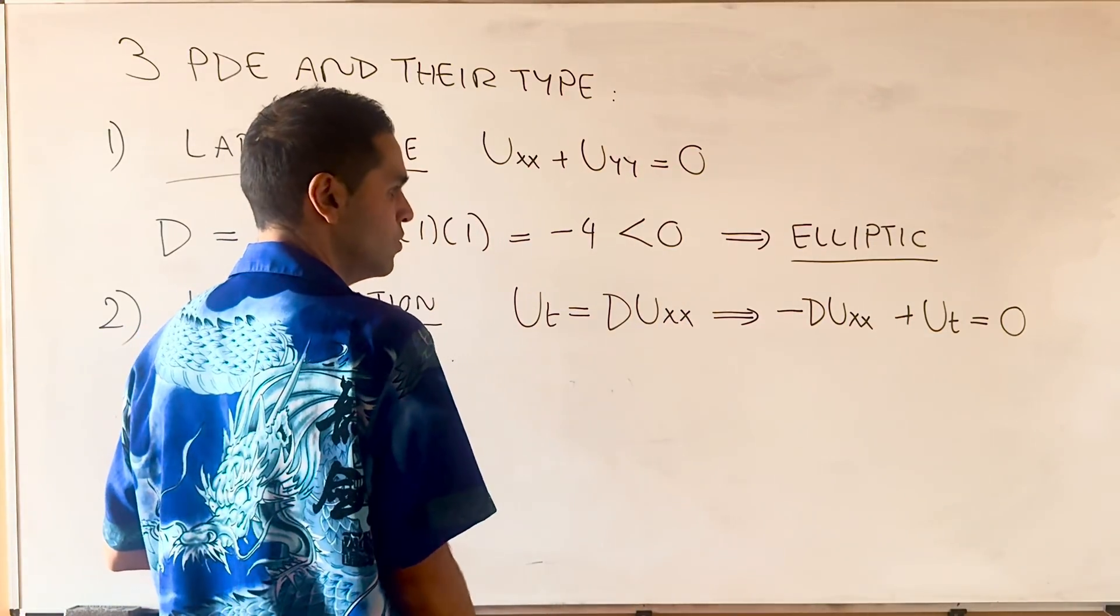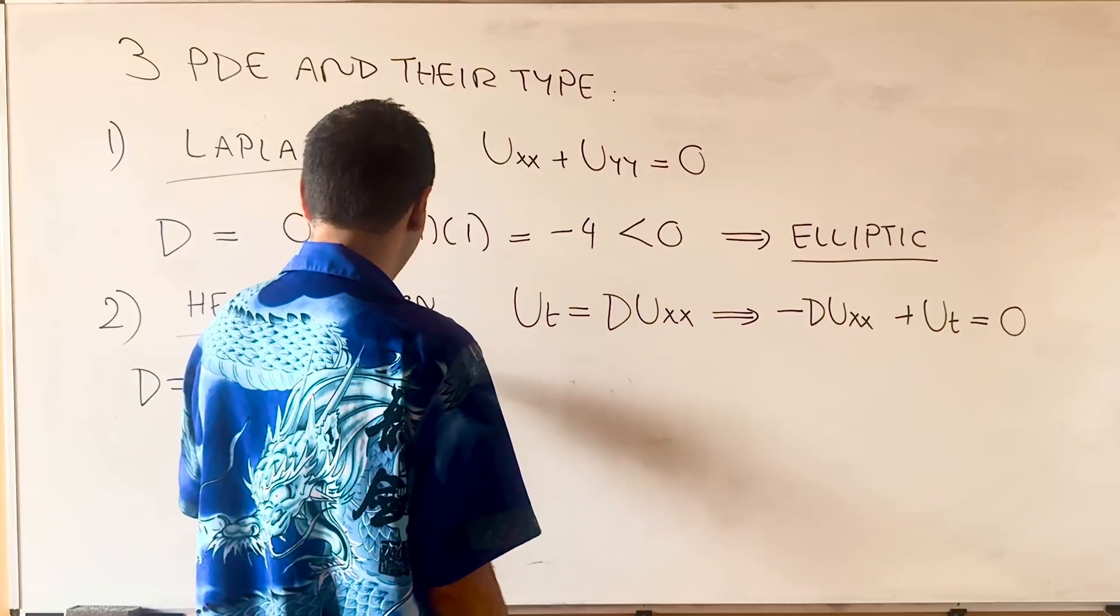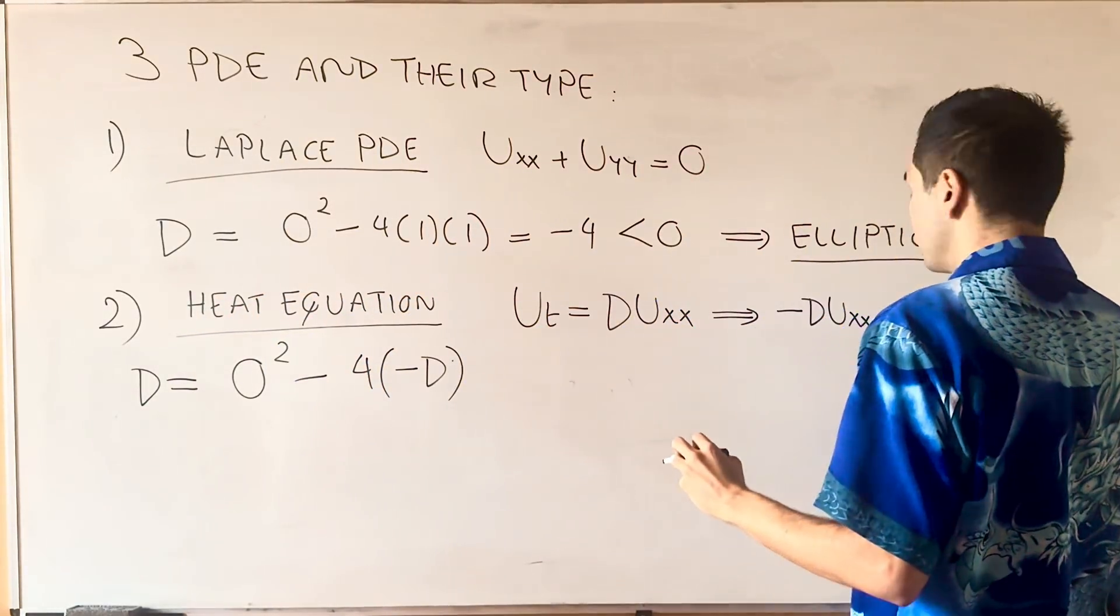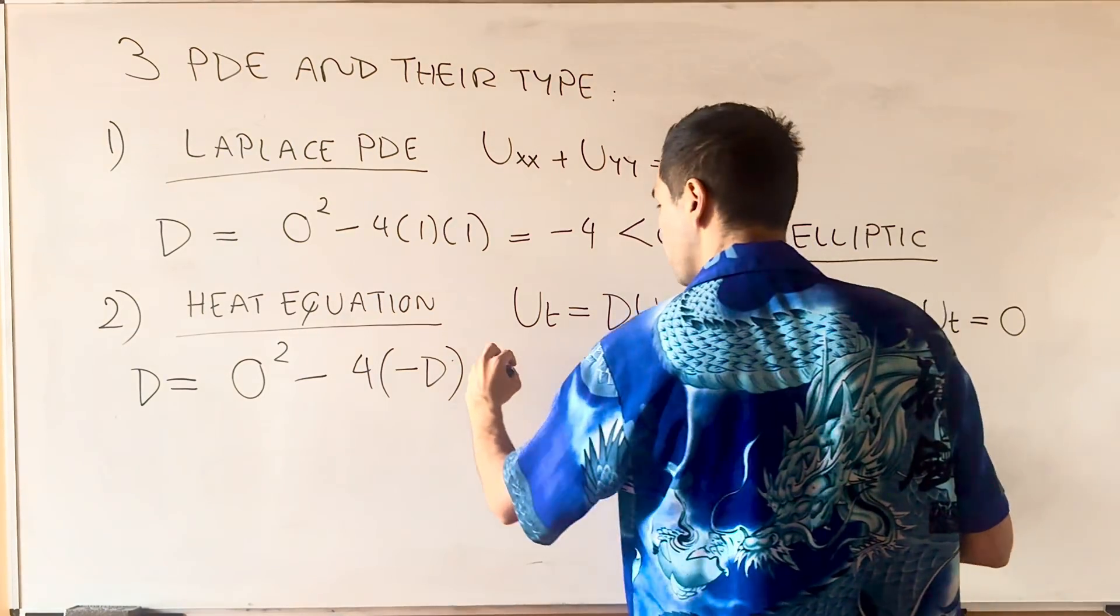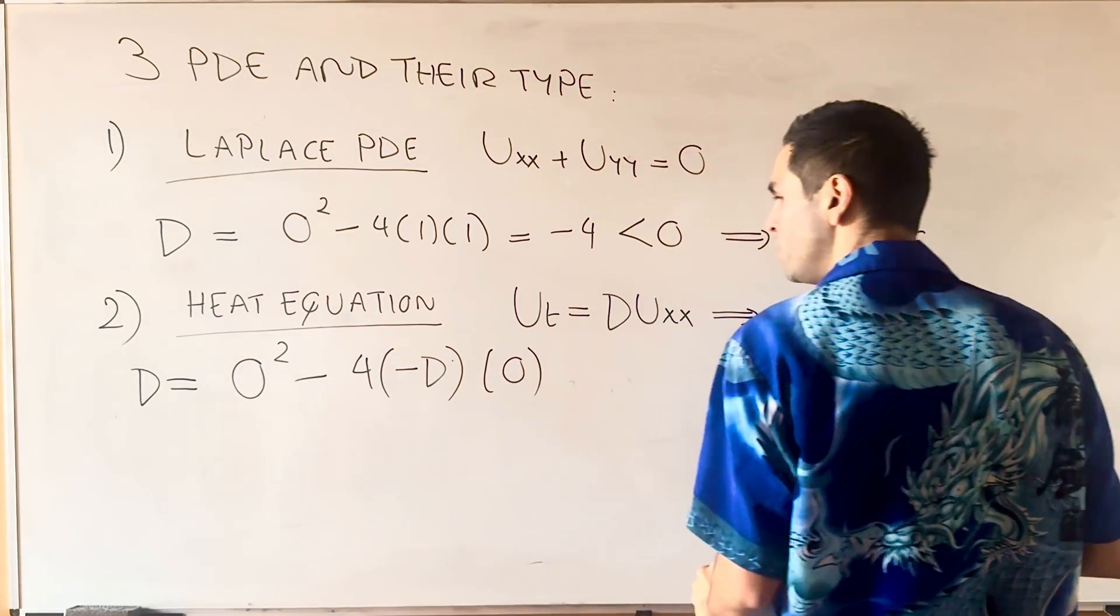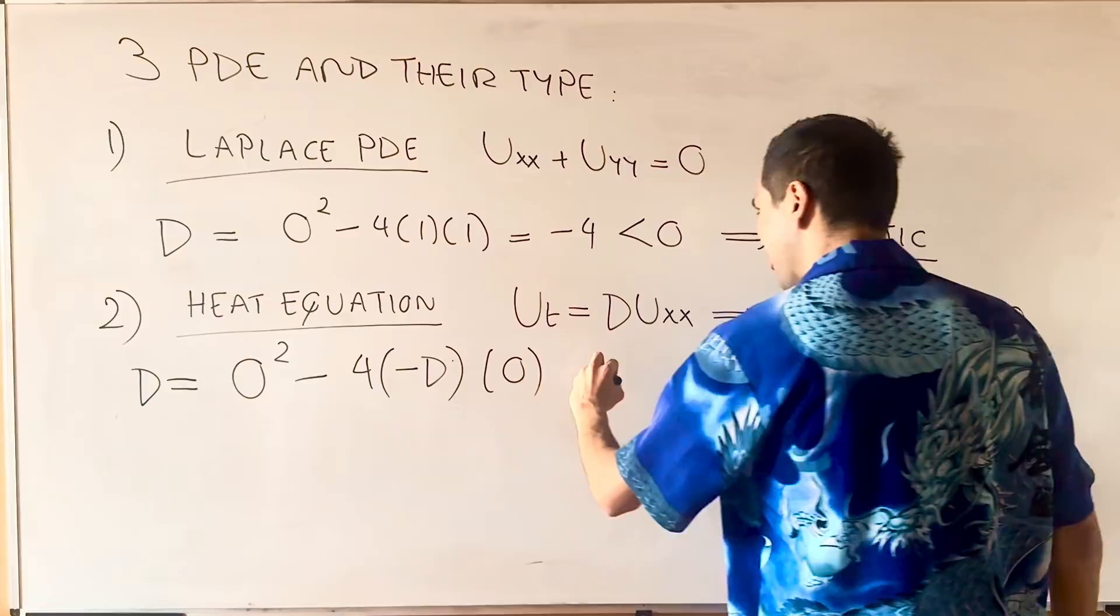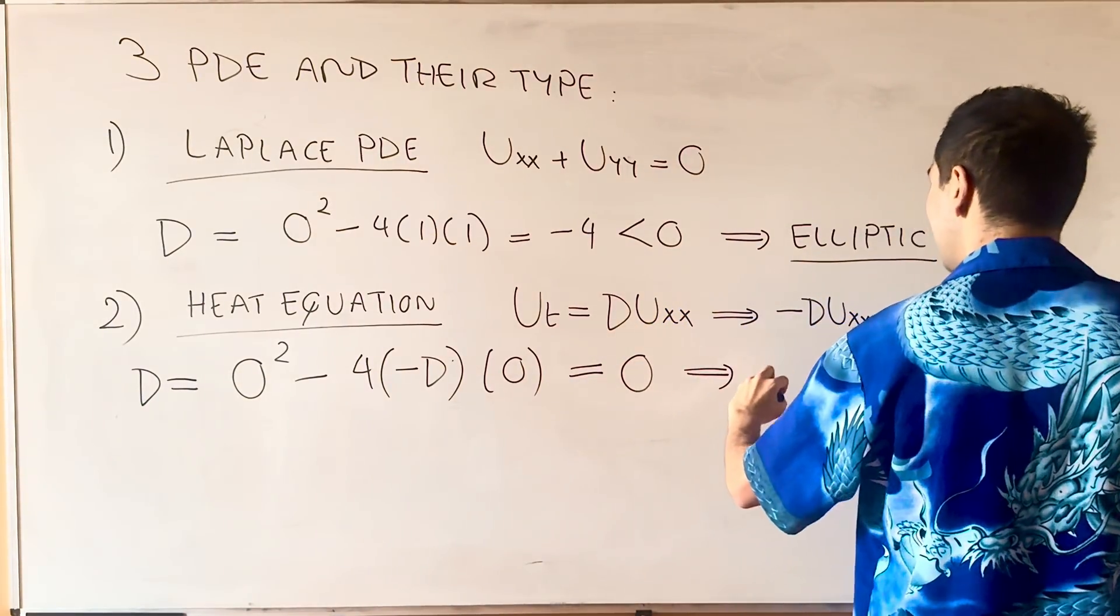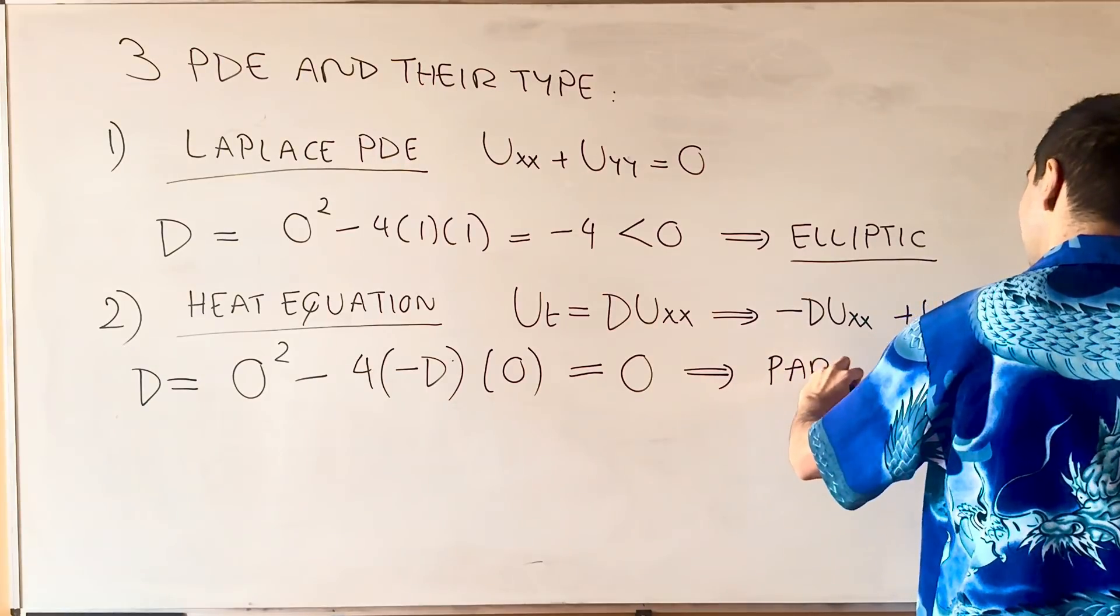so B² is 0², and then minus 4AC is minus 4 times minus D times 0, because there's no U_TT term, which gives us 0. So the heat equation is a prominent example of a parabolic PDE.